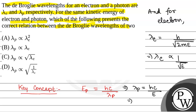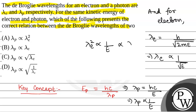And lambda of photon is inversely proportional to E. So from here we can see lambda of electron squared will be directly proportional to 1 upon E, which is directly proportional to lambda of photon. So lambda of photon is directly proportional to lambda of electron whole squared. So the correct option will be option A.